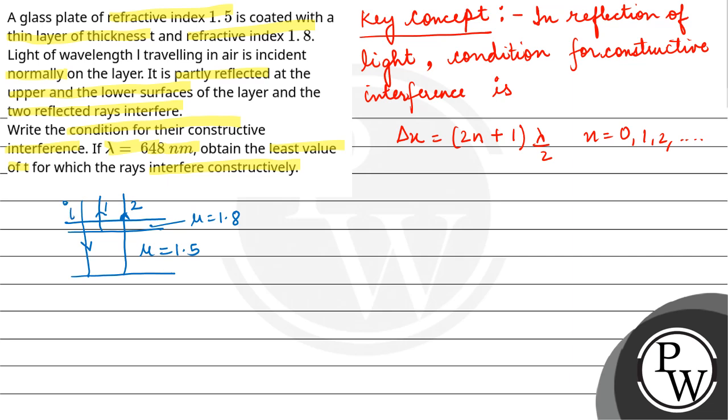There is a phase difference of pi, so the conditions for constructive interference will be opposite. Let's say this is μ1 and this is μ2. We have a condition for constructive interference that path difference is equal to (2n+1) lambda by 2, where n is equal to 0, 1, 2, and so on.